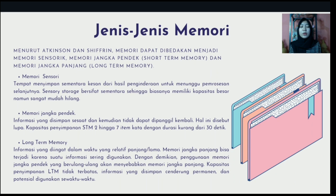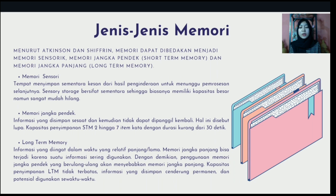Short-term memory storage capacity is about 7 word items, with a duration of less than 30 seconds. Examples of short-term memory include remembering a phone number, object, location, colors, direction, and storage from books read. Usually, when we lose our short-term memory, we always ask the same question over and over again.